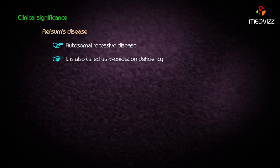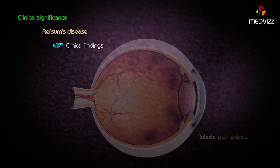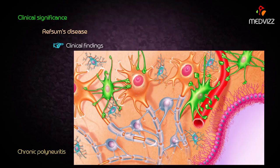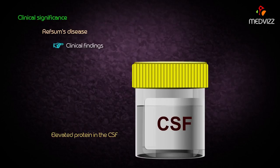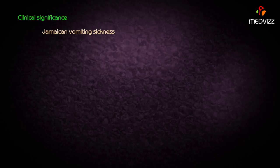Refsum's disease is an autosomal recessive disease also called alpha oxidation deficiency. Like beta oxidation, there is an oxidative process of fatty acids called alpha oxidation, and deficiency of alpha oxidation causes Refsum's disease. Clinical findings include retinitis pigmentosa, dry scaly skin, chronic polyneuritis, cerebellar ataxia, and elevated protein in the cerebrospinal fluid.